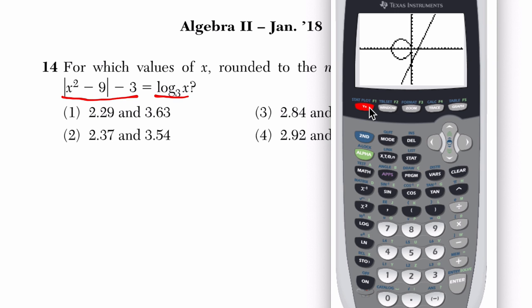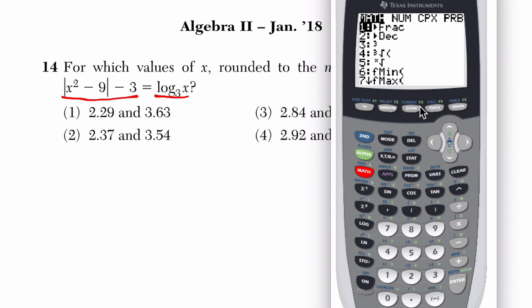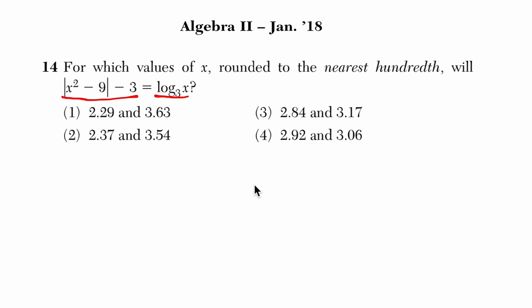So first of all, I'm going to clear off any old equations that I have here. All right, and first let's enter our absolute value. Now to do that, we press the math button, and we go to number, and the first choice is absolute value. Hit enter, and you might see these brackets, as long as it says abs here in absolute value. We'll do x squared minus 9, and then outside the brackets minus 3.